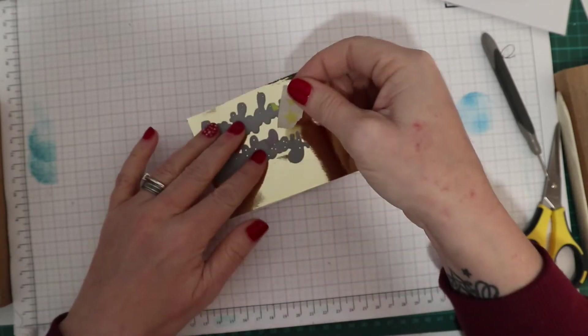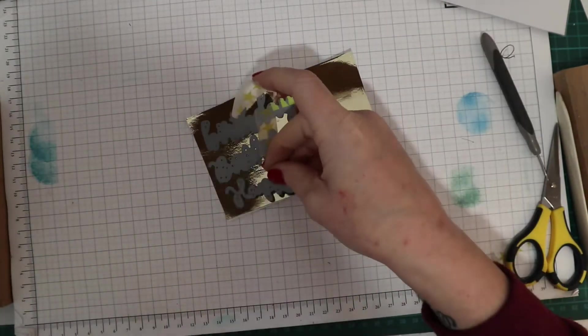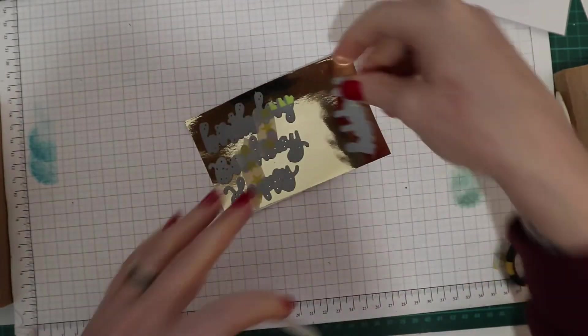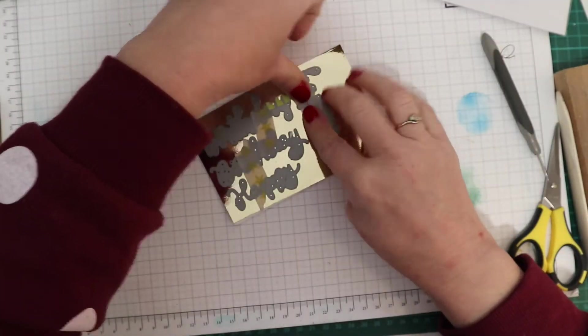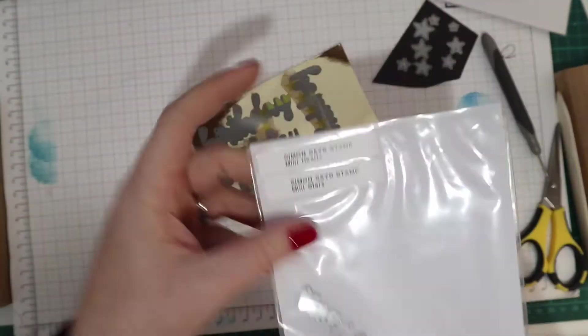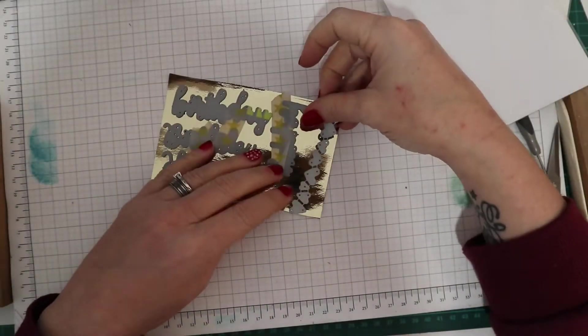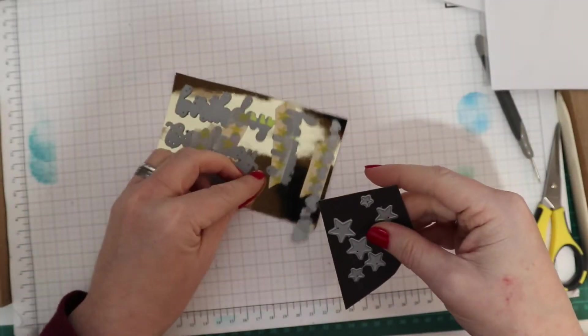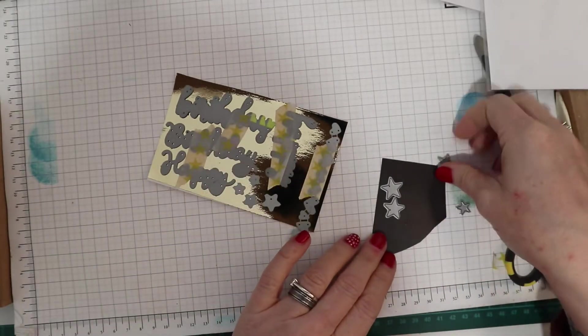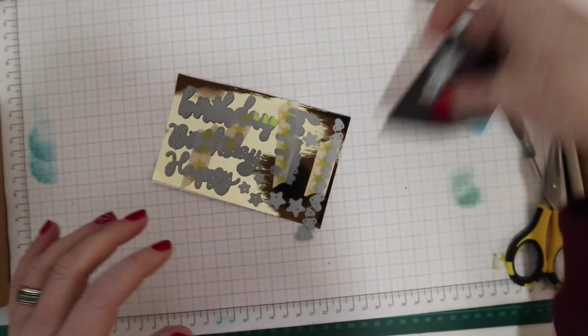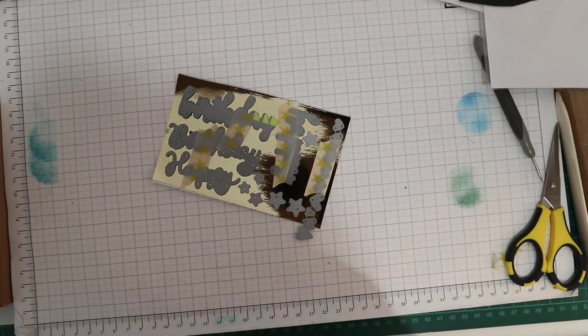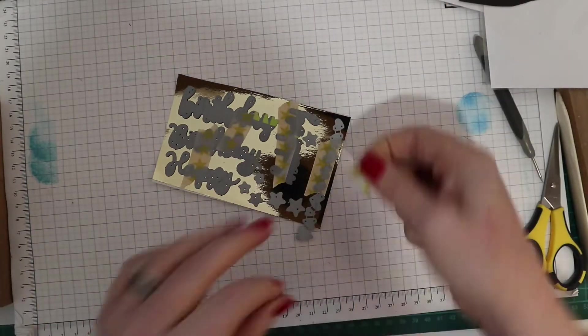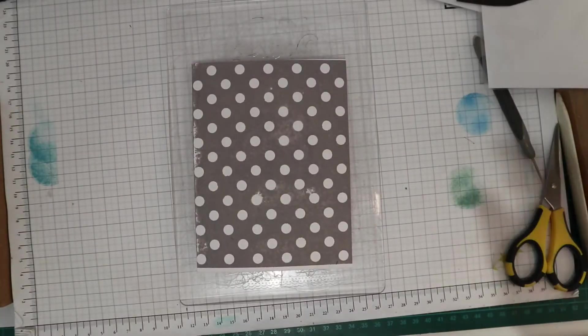I've got my sheet of foiled cardstock, so now I need to die cut my sentiment. I knew I was making a birthday card, so happy birthday was the sentiment, but I couldn't decide between my Simon Says Stamp one or the MFT Brushstroke Birthday Greetings. The Simon Says Stamp one is lovely but very fine. The brushstroke one's got a slightly thicker font to it. I decided to cut a series of hearts and stars with the space left on the foil.